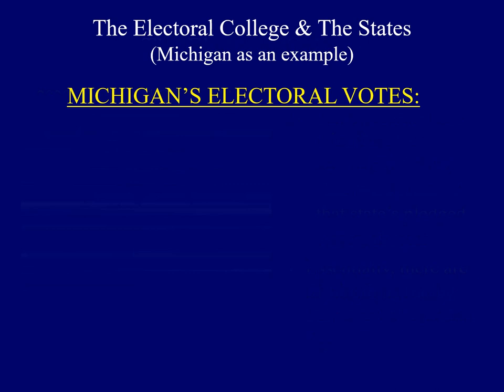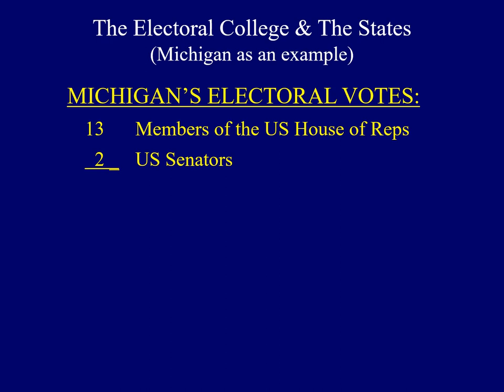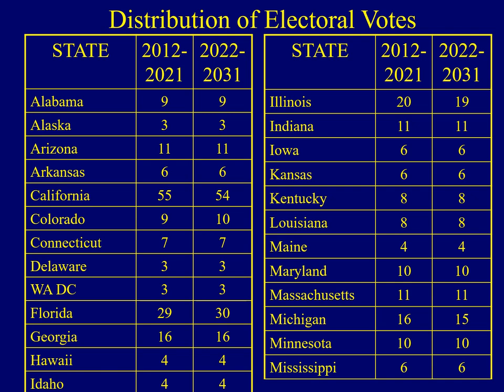Let's use Michigan as an example to explain this process. Michigan has 13 members of the House of Representatives and also has two U.S. Senators. 13 plus 2 equals 15, so Michigan has 15 electoral votes. Please do not try to memorize all these numbers — I'd like to provide an example of the distribution of electoral votes. Looking at the map, we see the number of electoral votes for each state. Alaska is a very small state, so Alaska only has three electoral votes.